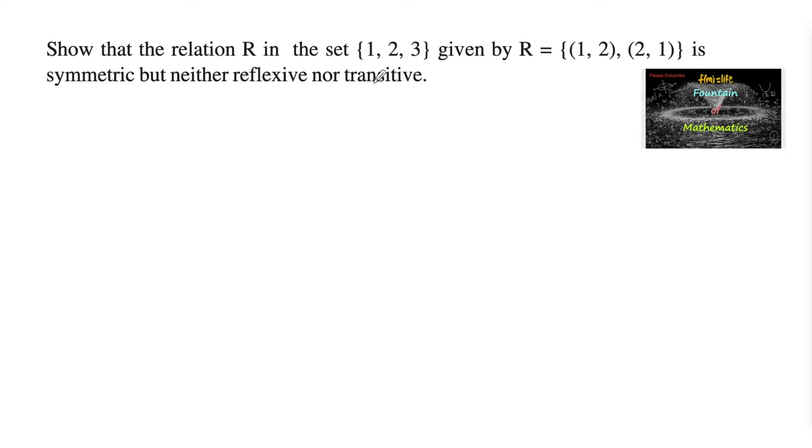Show that the relation R in the set {1, 2, 3} given by R = {(1,2), (2,1)} is symmetric but neither reflexive nor transitive.